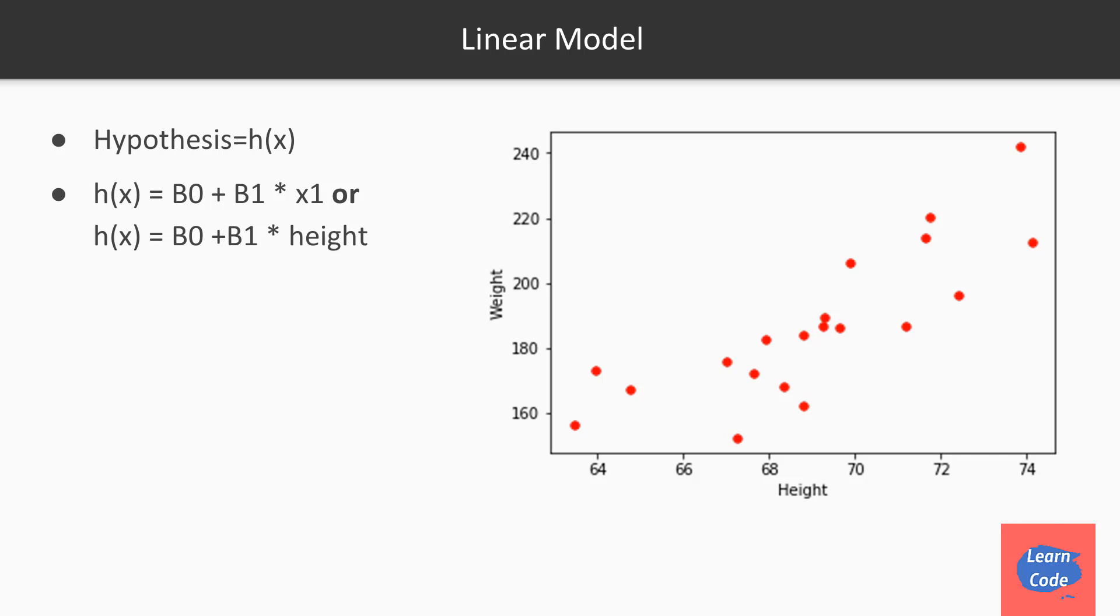And if you want to predict somewhere, let's say here, we'll assume that it will be somewhere here on the weight scale. So what we do is we try to fit a line. This line now represents all the points where we can estimate the weight for a given height, and we represent it using the equation of a line.